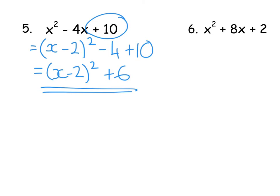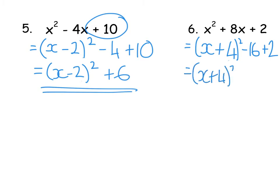Second example: X² + 8X + 2. Following the steps: open bracket, X, it's a plus sign, half of 8 is 4, so (X + 4)². Then 4² = 16, so take away 16 — remember it's always take away whatever you've put in the bracket squared. Then add on the +2 at the end. Tidy up: -16 + 2 = -14. So the answer is (X + 4)² - 14. Be careful — this is where a lot of people make silly mistakes.